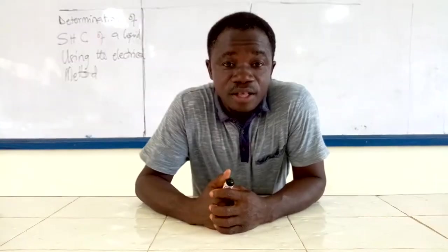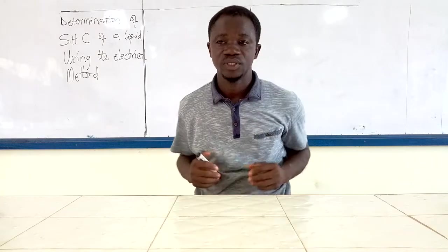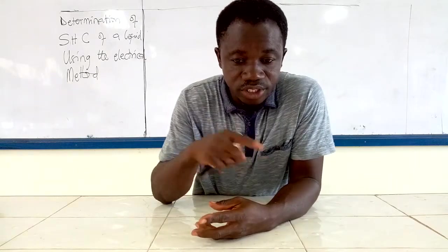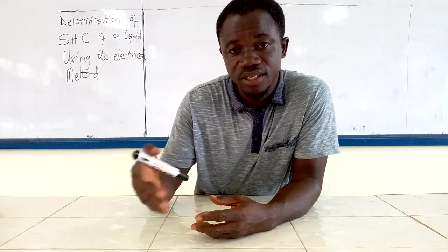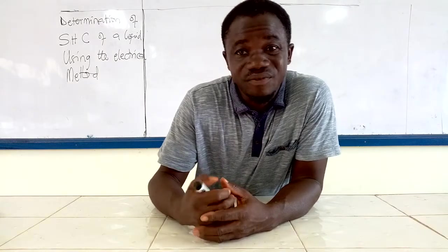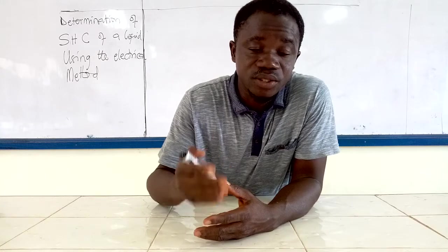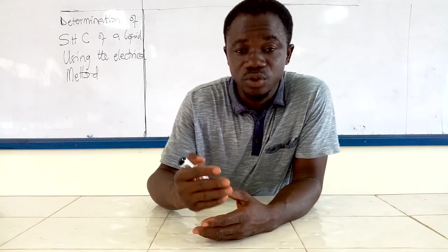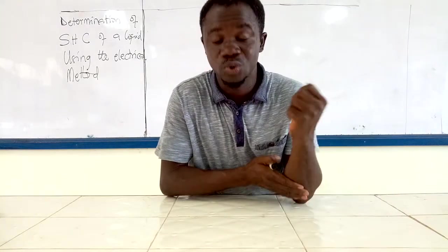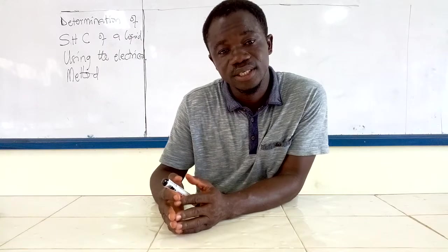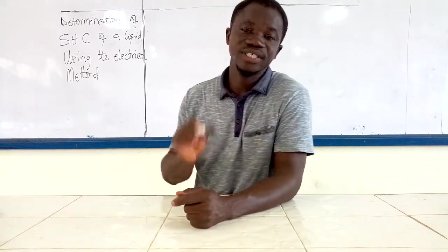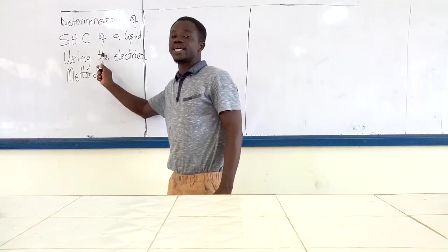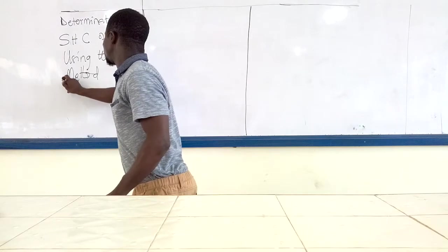Welcome everyone to another episode of BG's Physics Classroom. This section is going to take us through the continuation of thermal physics. Previously we looked at determination of specific heat capacity of a liquid using the method of mixtures, which also helped us determine the specific heat capacity of a solid. Today we are going to look at determination of specific heat capacity of a liquid using the electrical method.